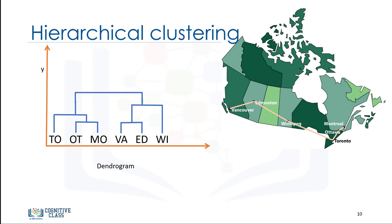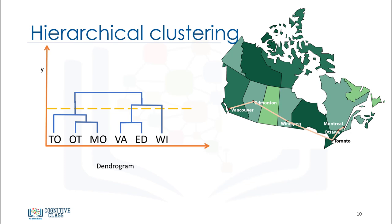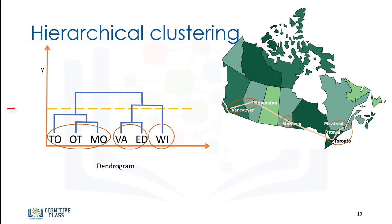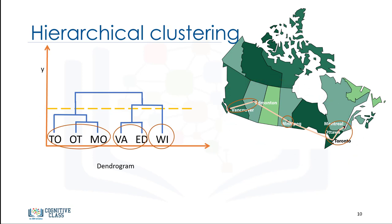Hierarchical clustering does not require a pre-specified number of clusters. However, in some applications we want a partition of disjoint clusters, just as in flat clustering. In those cases, the hierarchy needs to be cut at some point. For example, cutting at a specific level of similarity, we can create three clusters of similar cities. This concludes this video. Thanks for watching.